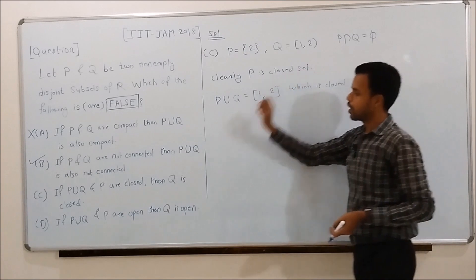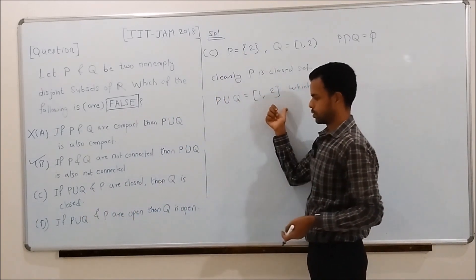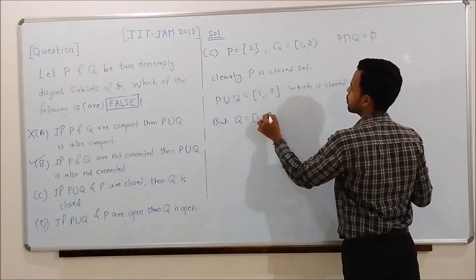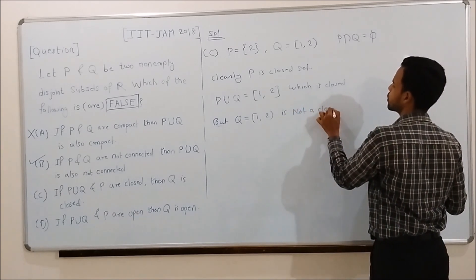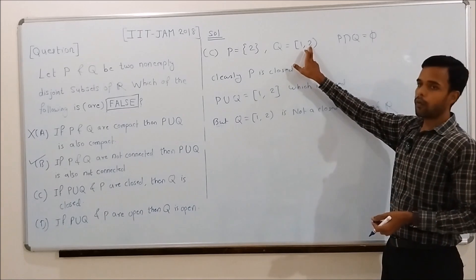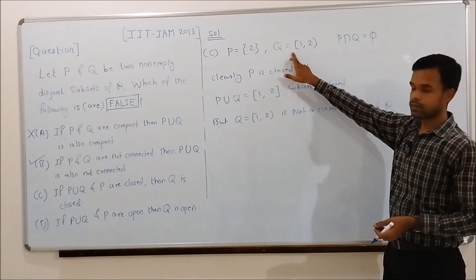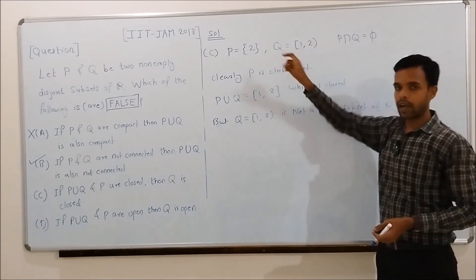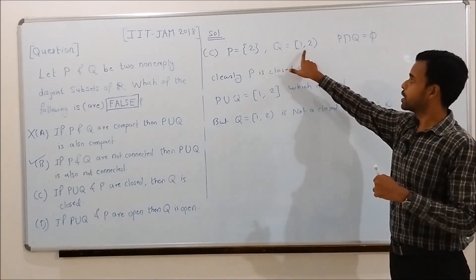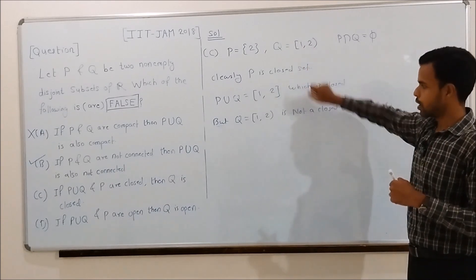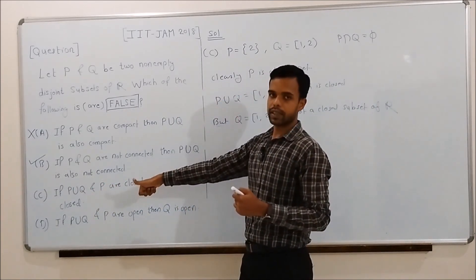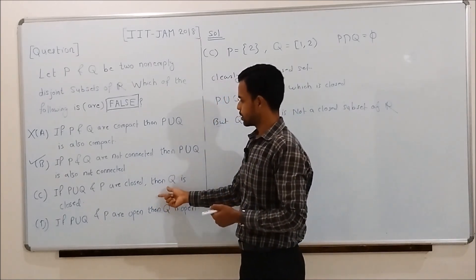So P union Q and P are both closed. However, Q = [1,2) is not a closed subset of R because 2 is a limit point of Q which does not belong to Q. We know that closed subsets of R must contain all of their limit points, but Q does not contain 2. So Q is not a closed subset of R.